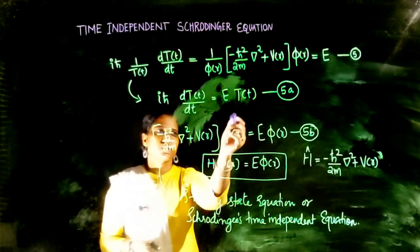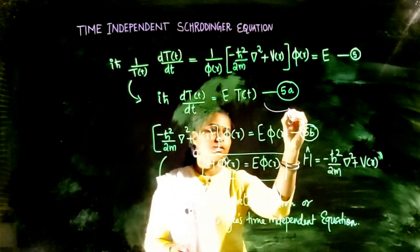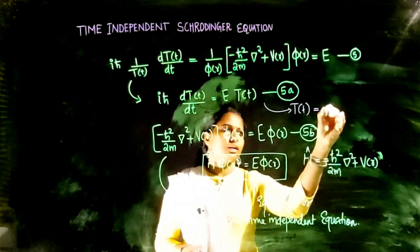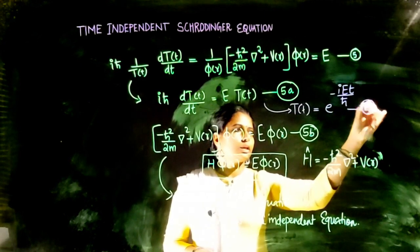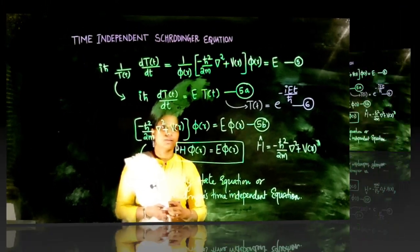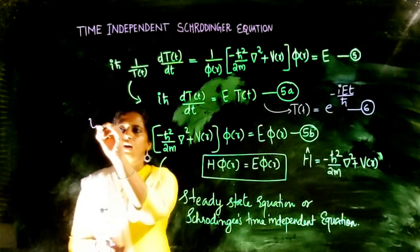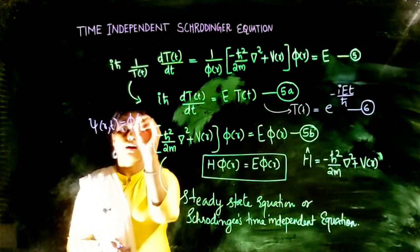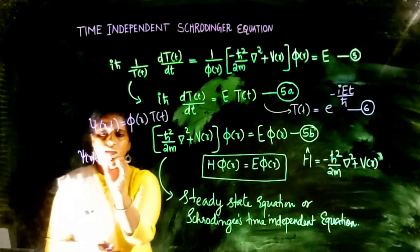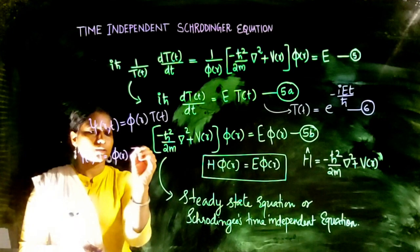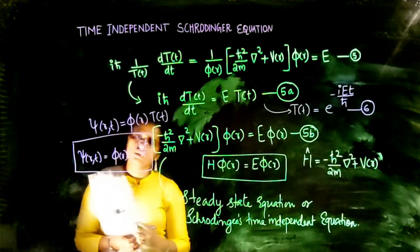Equation 5A can be integrated to find T(t). After integrating, we get T(t) = e^(−iEt/ħ). This represents the solution to the eigenvalue equation for the energy operator. Therefore, the complete wave function solution psi(r,t) = φ(r) · e^(−iEt/ħ), which is the solution to the three-dimensional time-dependent Schrödinger equation.